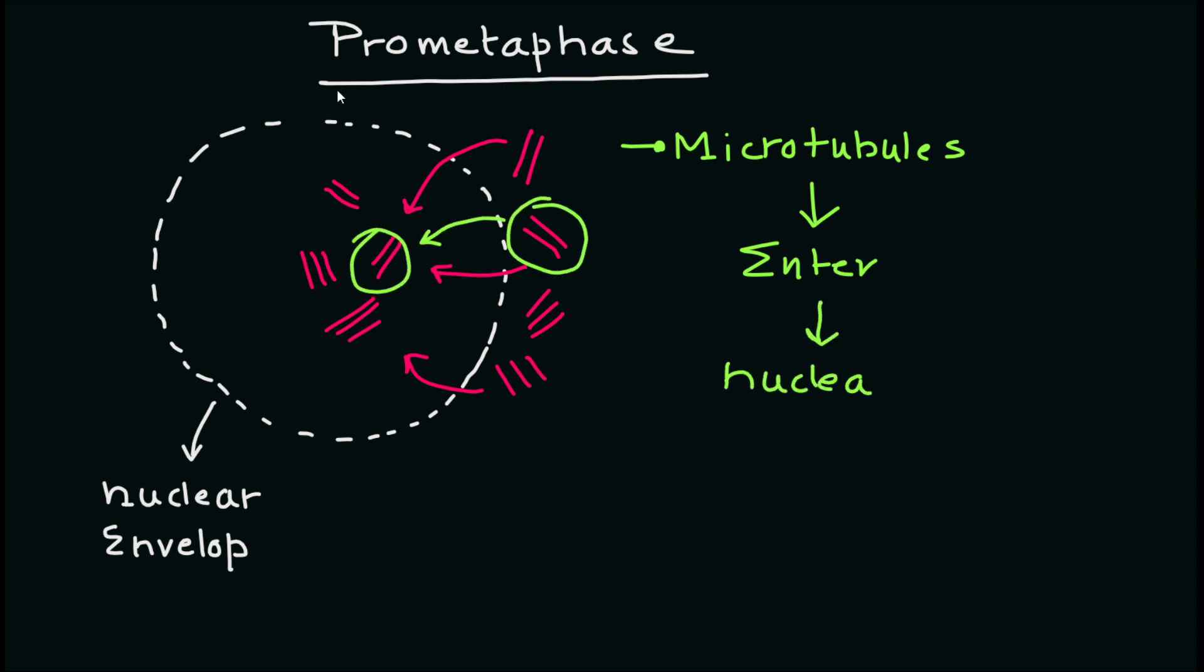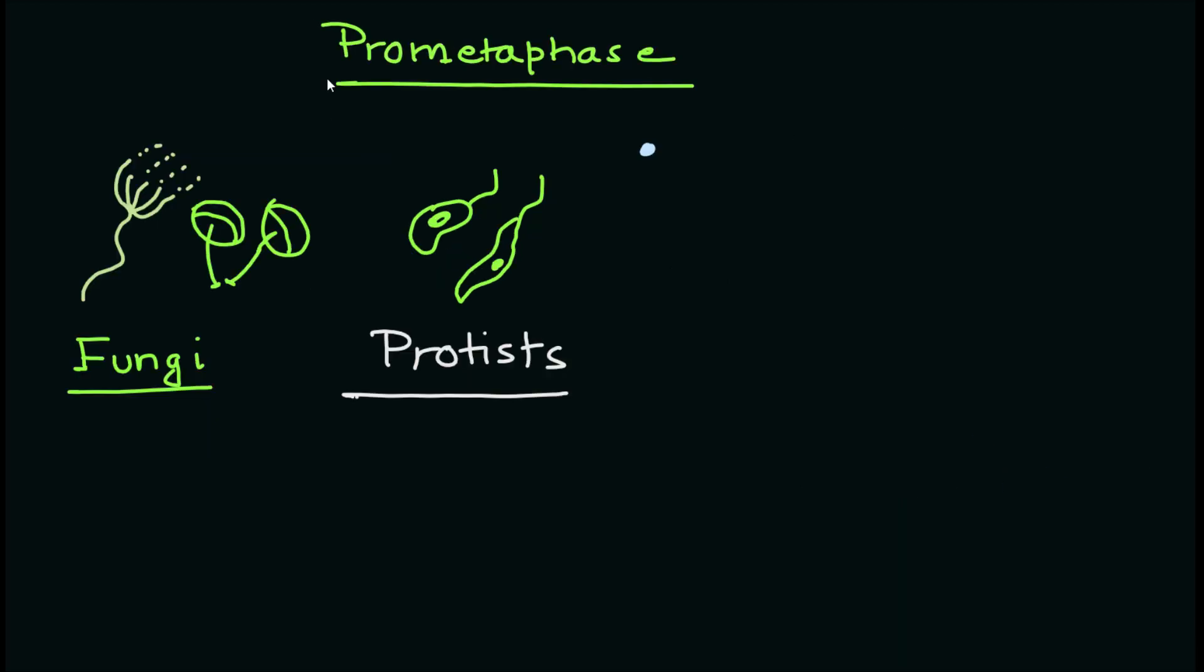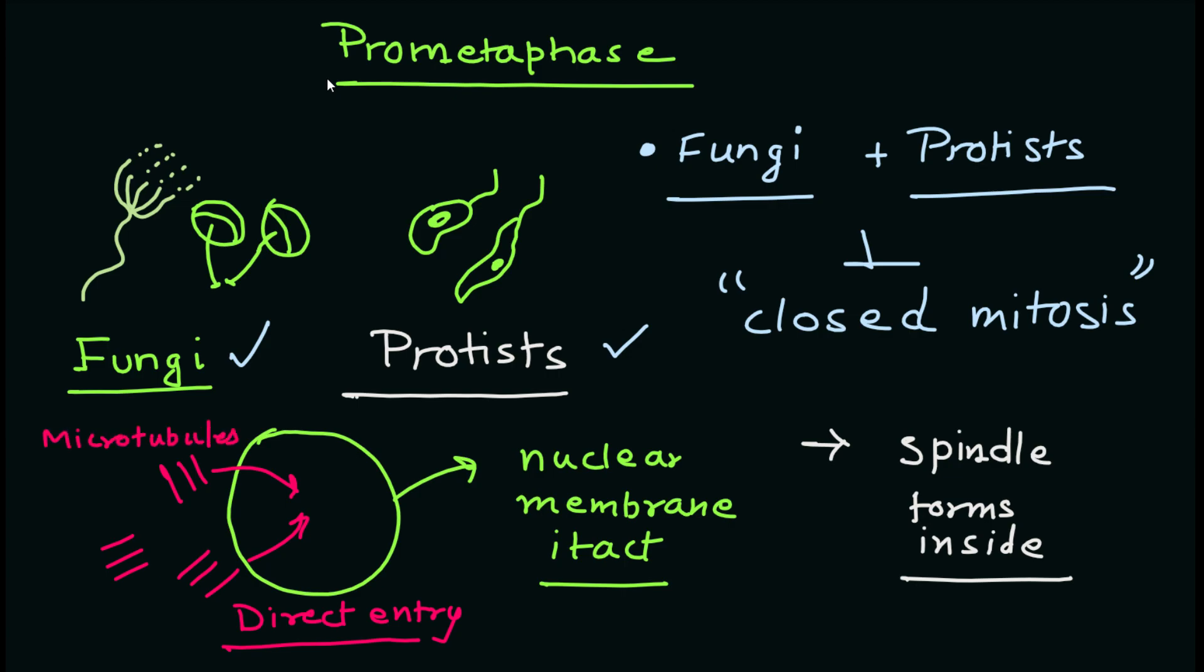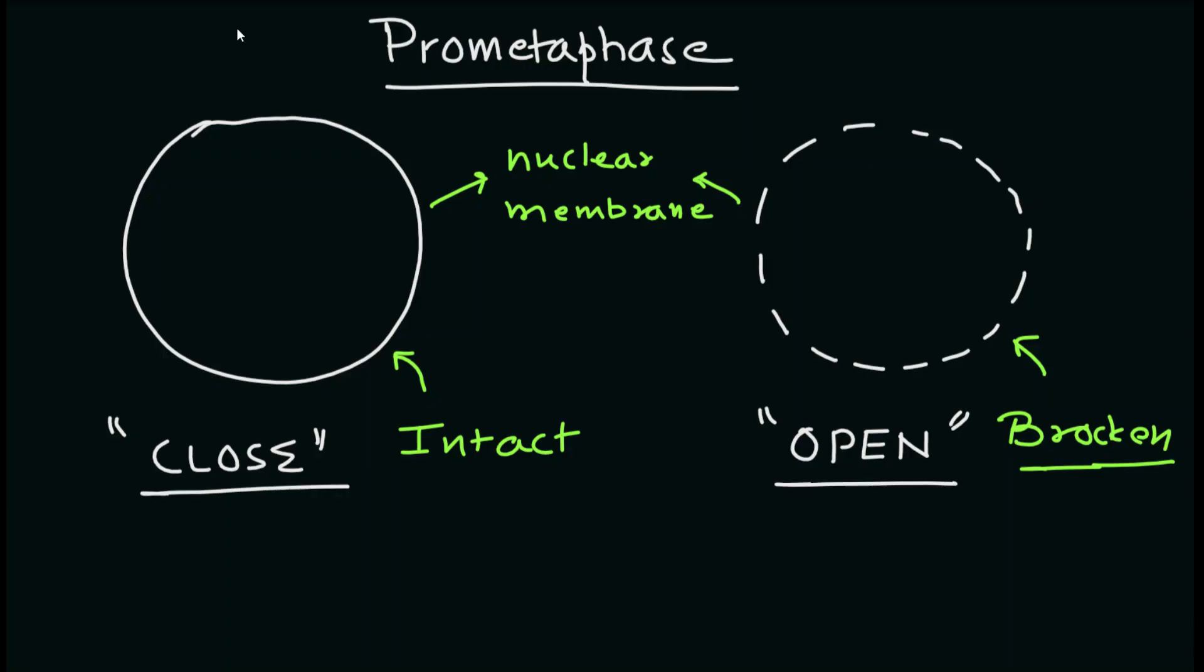Fungi and some protists undergo a variation called closed mitosis, where spindle formation occurs inside the nucleus. The microtubules penetrate inside the nucleus when the nuclear envelope is intact.